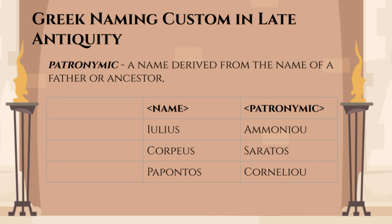In the Greek-speaking world of that period, the standard naming convention was personal name plus patronymic, usually with the suffix -ou, which meant 'of'. For example, Paponkos Carneliu meant 'Paponkos, son of Carnelius'. After the Edict of Caracalla, the native Greeks simply stuck Aurelius in front of their names and didn't change anything else.